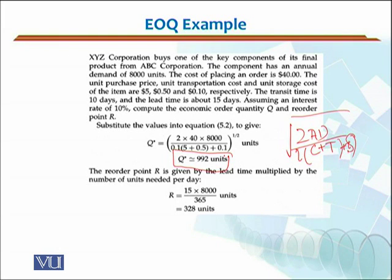The reorder point R is given by the lead time multiplied by the number of units needed per day. Here, my reorder point would be lead time 15 days and my yearly demand is 8,000. I will simply multiply these two numbers, L×D, and divide it by 365. That will give me my reorder point which in this case would be 328 units.